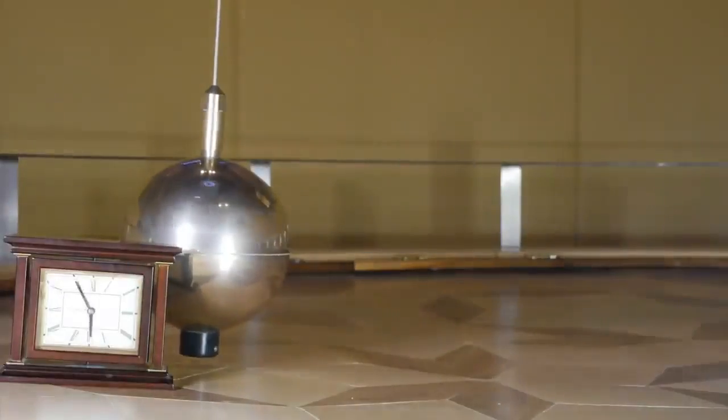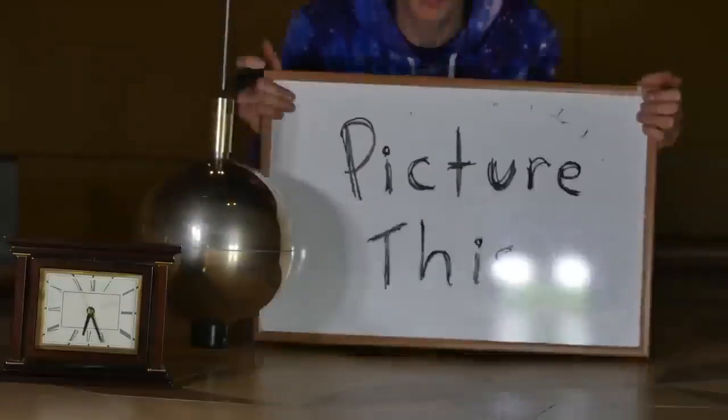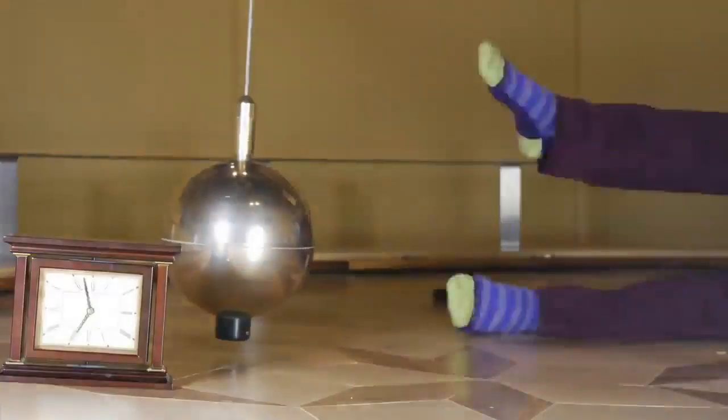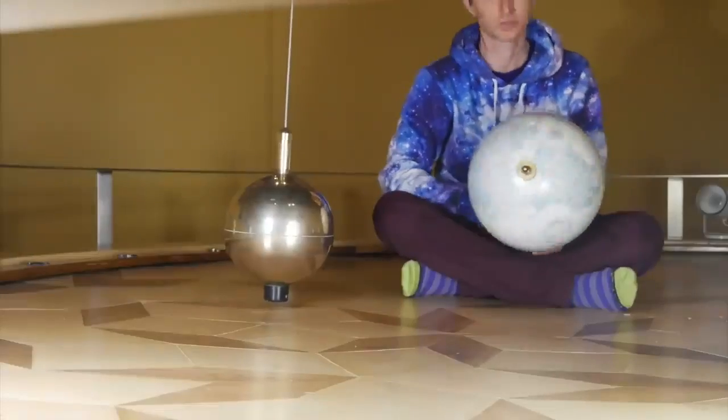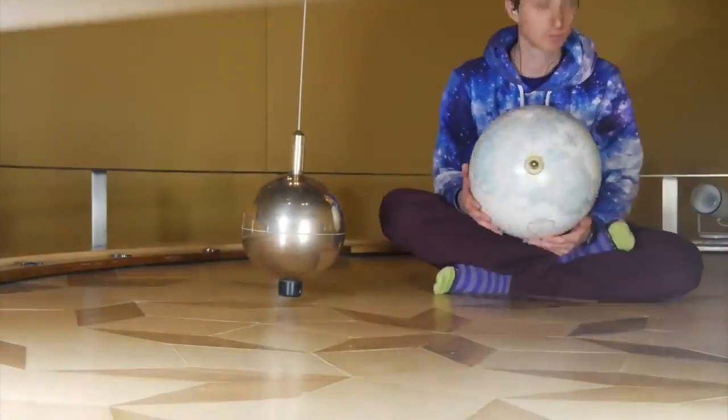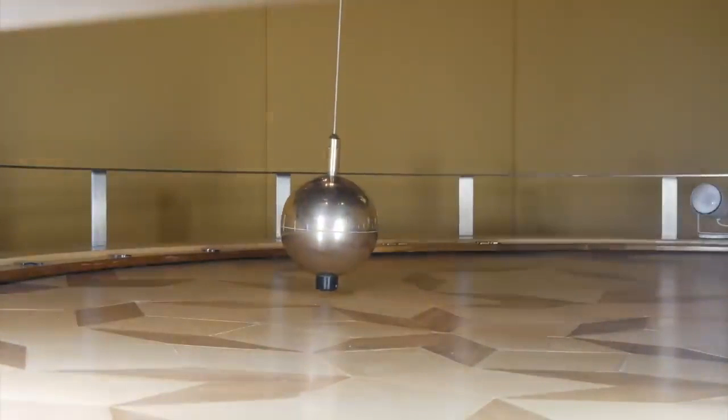Now while that's incredible if you ask me, it can also be hard to grasp. So, I want you to picture this. A Foucault pendulum placed at the North Pole would appear to complete a clockwise circle once every 24 hours, as the Earth completes a day by rotating beneath it.